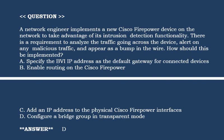Option A: Specify the BVI IP address as the default gateway for connected devices. Option B: Enable routing on the Cisco Firepower. Option C: Add an IP address to the physical Cisco Firepower interfaces. Option D: Configure a bridge group in transparent mode. Correct answer is Option D.